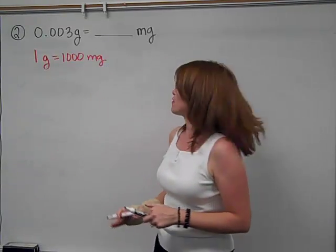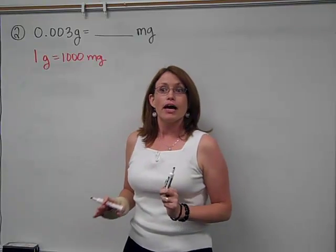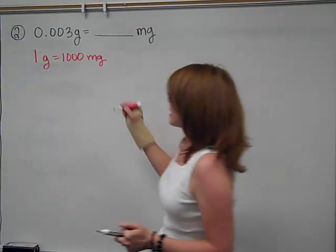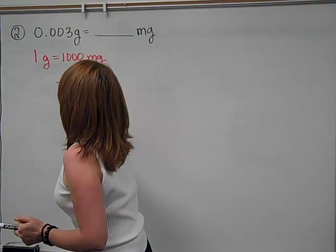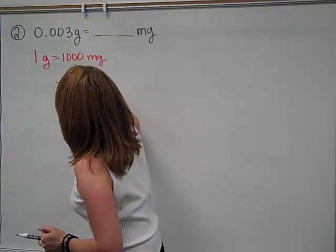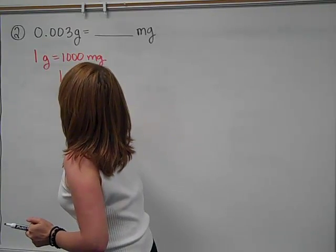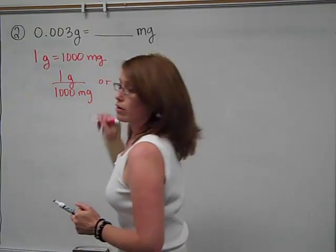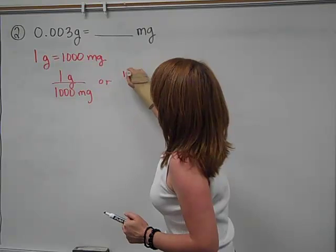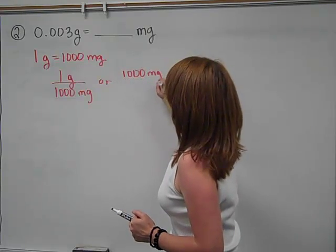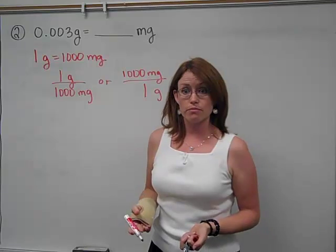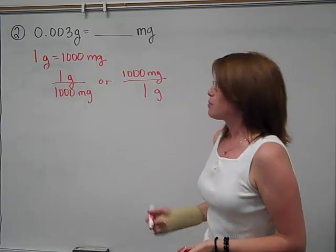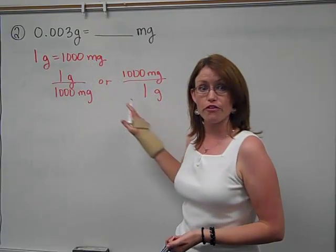I'm going to look through, and I notice that I have one gram equals a thousand milligrams. So I'm going to write down what I'm going to use. One gram equals a thousand milligrams. That's the conversion I'm going to use. This will just be a one-step problem, very quick and easy.